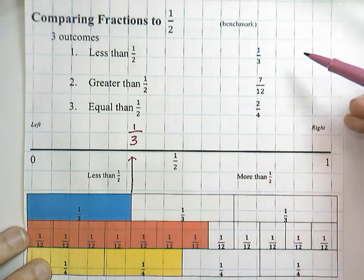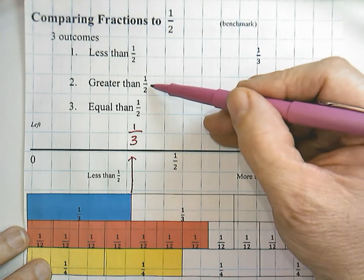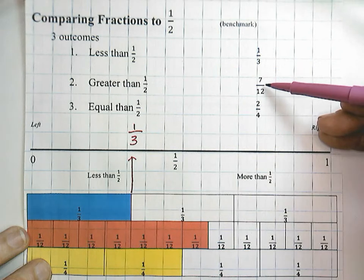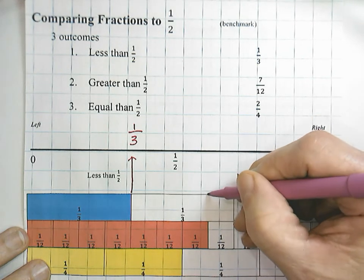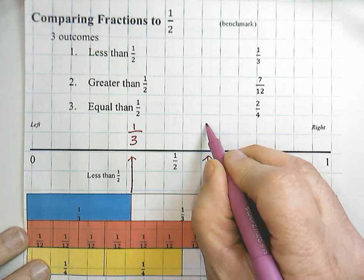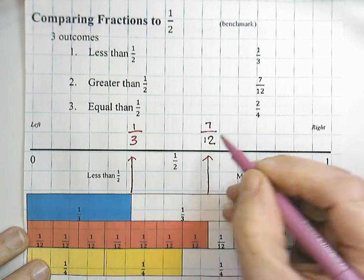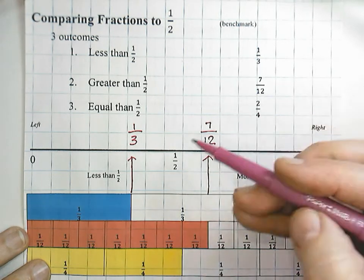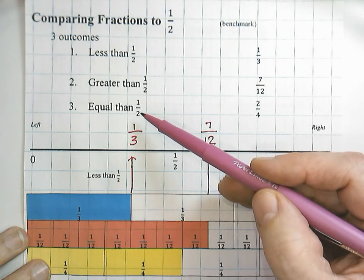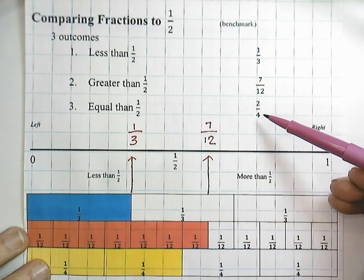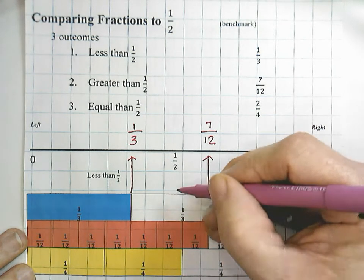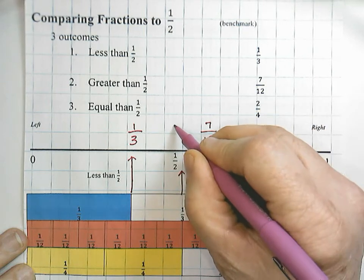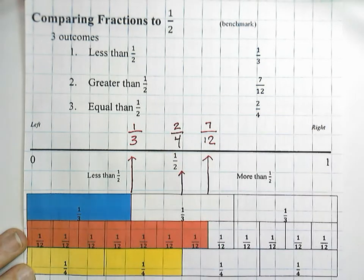The second outcome is greater than one-half. For example, seven-twelfths — you can see our model here counting one through seven — and roughly seven-twelfths would be placed on the number line right here. And finally, when you compare fractions, it could be equal to one-half. For example, two-fourths — here you can see one, two-fourths coming up right here. Remember, that would be equivalent to one-half.